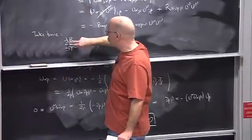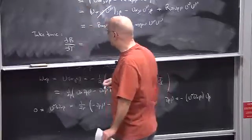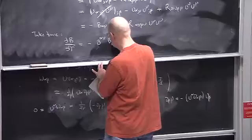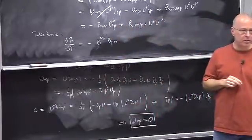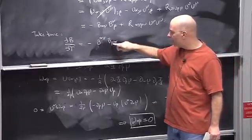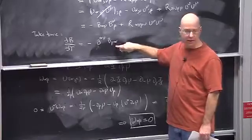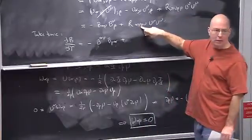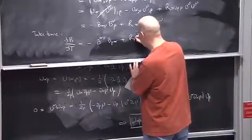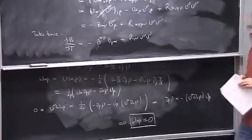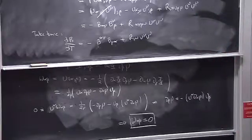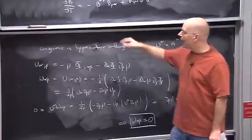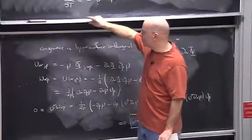On the right-hand side, taking the trace of the –B B product gives me a product of two B's contracted. It's important to notice that the index ordering in each term is not the same after taking the trace. Taking the trace of the Riemann term gives me the Ricci tensor R_μν u^μ u^ν. So I just need a couple more steps to re-express everything in terms of the simpler quantities.